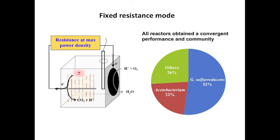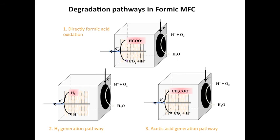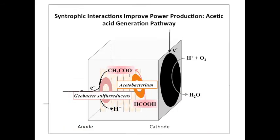In order to see if these syntrophic interactions could be maintained over time, all MFCs were then examined in longer-term operation. All reactors were disconnected from the potentiostat and operated with external resistance for maximum power production. At this mode, they produced similar power densities and exhibited the same midpoint potential of minus 0.15 volts in first-derivative cyclic voltammetry scans. All the mixed communities converged to similar proportions of the two prominent genera: 50% Geobacter sulfurreducens and 25% Acetobacterium. These results show that syntrophic interactions can be enhanced through setting certain anode potentials.